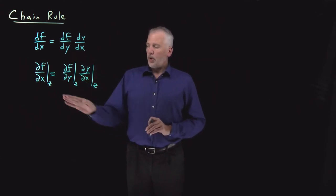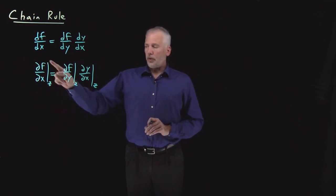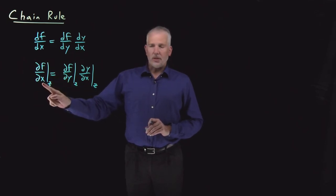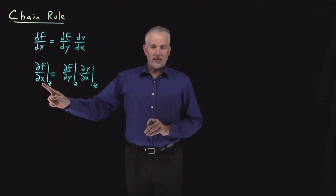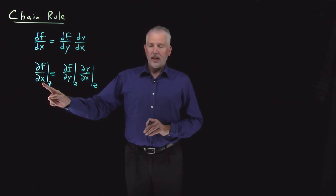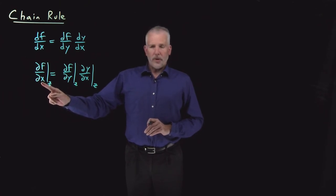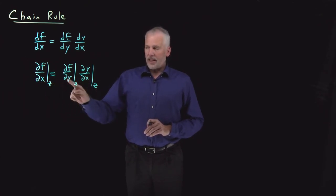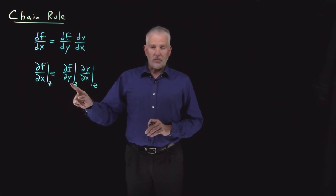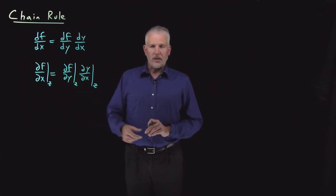What the chain rule gives us is the ability to rewrite a derivative with respect to some variable x that we might not be comfortable with or know anything about, and rewrite it as a derivative with respect to a different variable that we know more about.